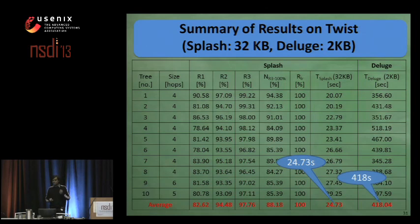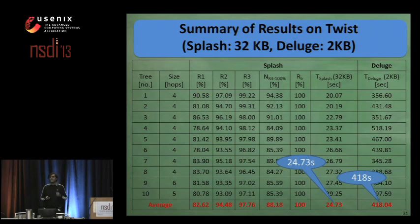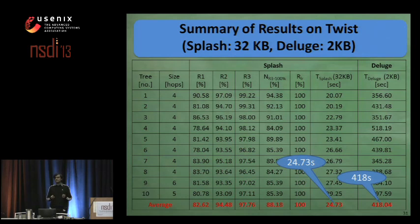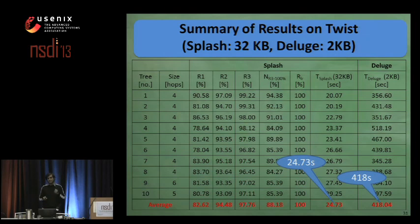For Deluge, we use its Contiki implementation on Twist, because executing TinyOS Deluge T2 on remote testbeds like Twist is a difficult task. As the Contiki implementation is thin and has minimal functionality, it is taking more than 400 seconds for disseminating a much smaller object of 2 kilobytes.